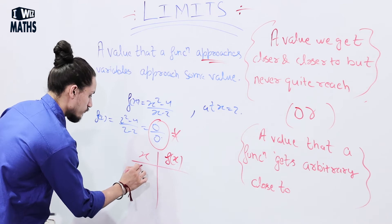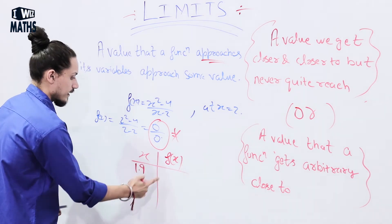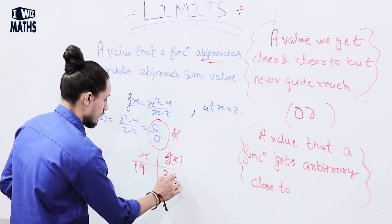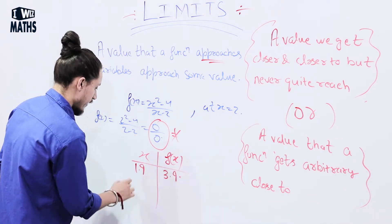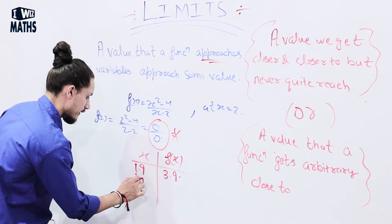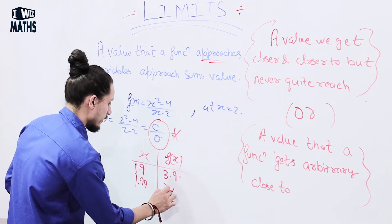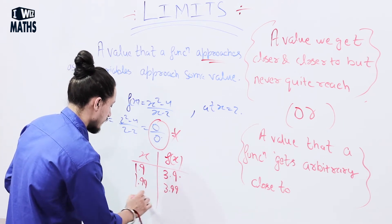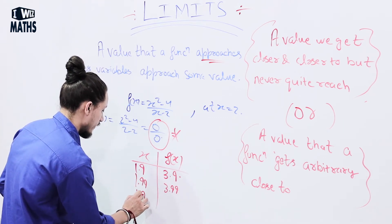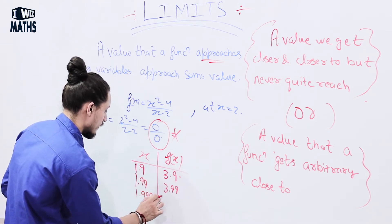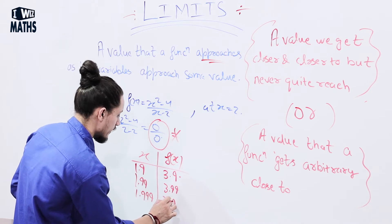At x = 1.9, I'll get the value 3.9. At x = 1.99, we'll get the value 3.99. At x = 1.999, we'll get the value 3.999.